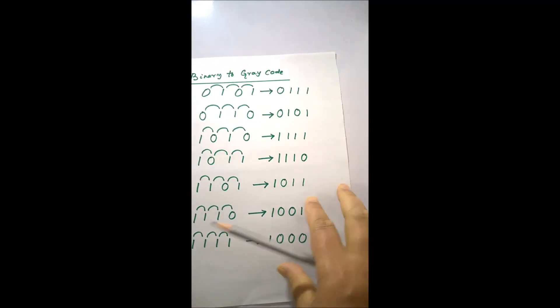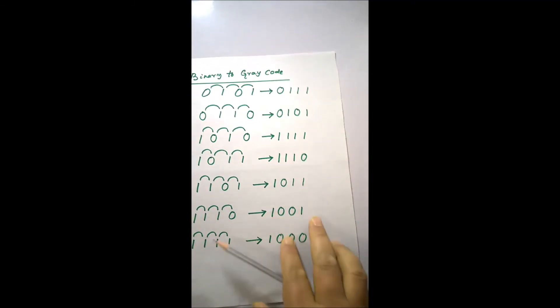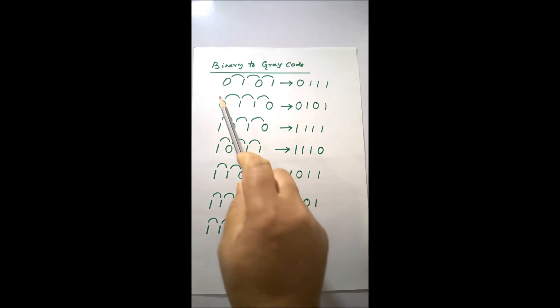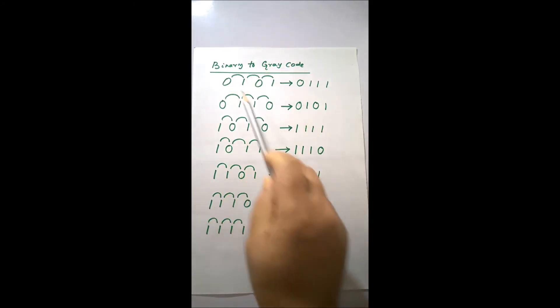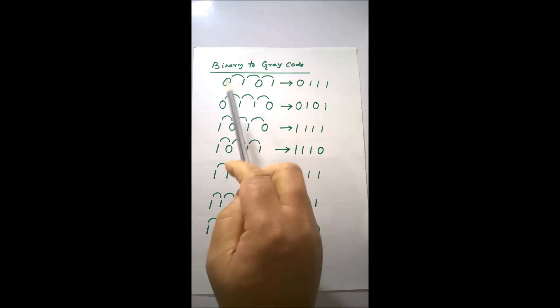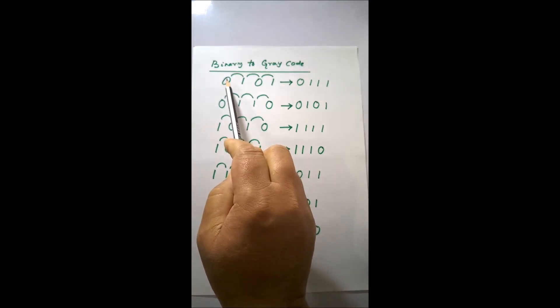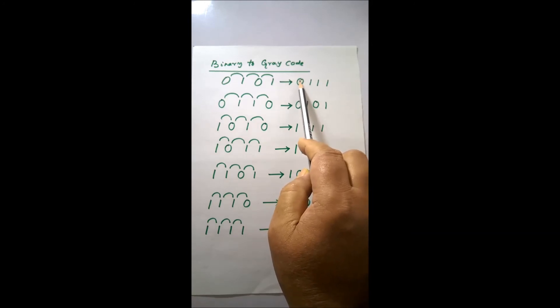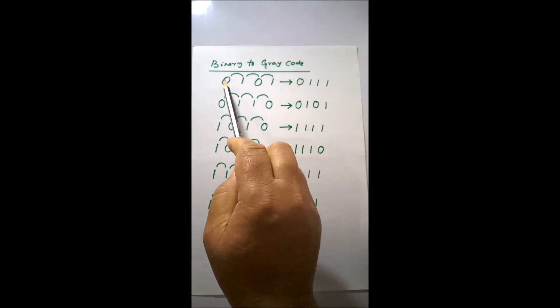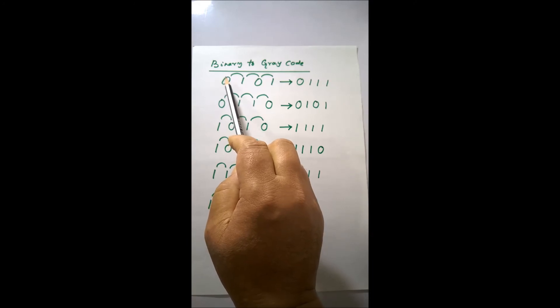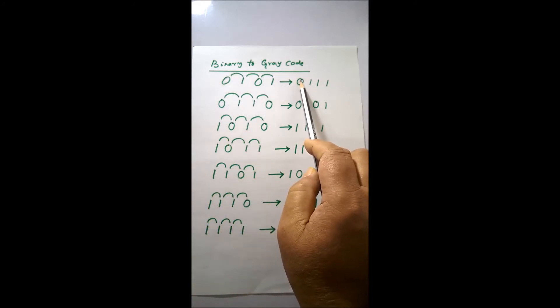This is the first method. Now for the second method — you need not convert in a serial manner in this case. You take any binary number, and whatever the most significant bit is, you write it as-is in the Gray code output.